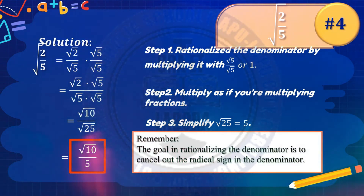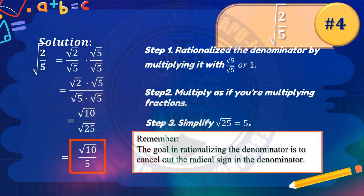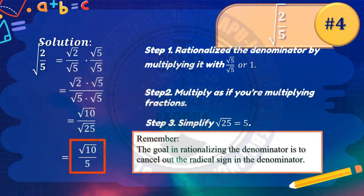Remember: the goal in rationalizing the denominator is to cancel out the radical sign in the denominator.